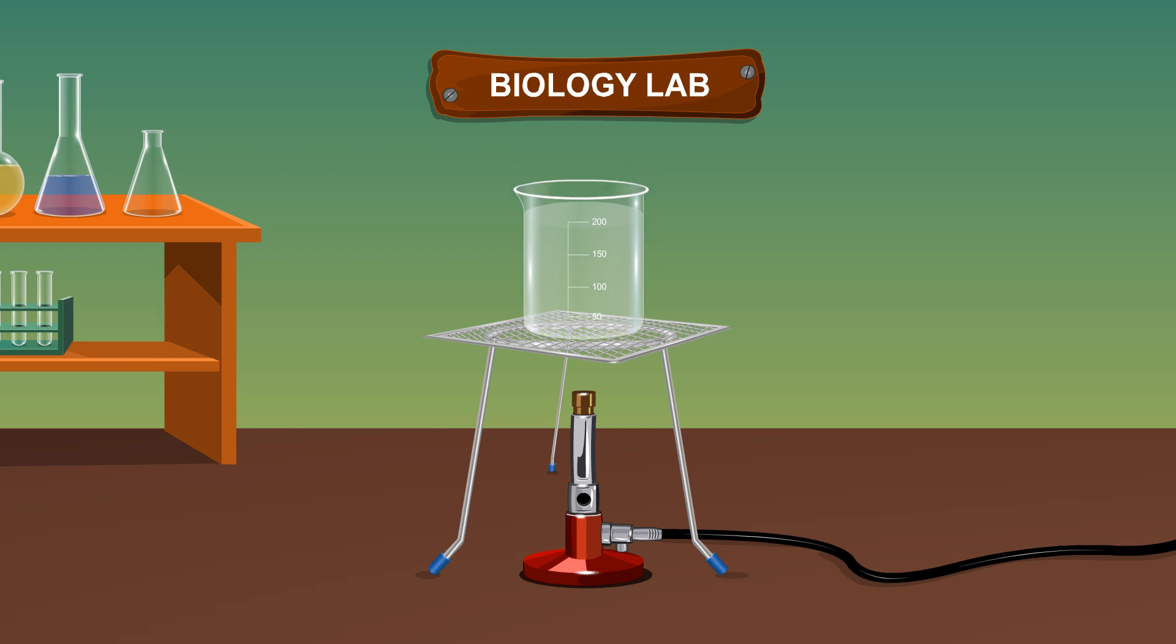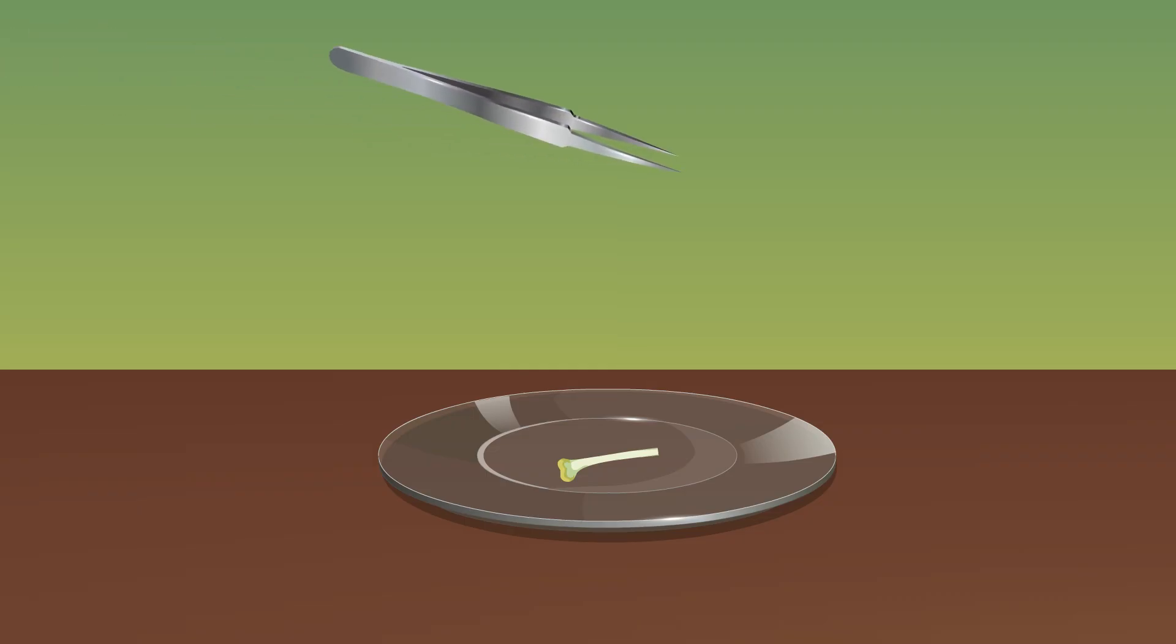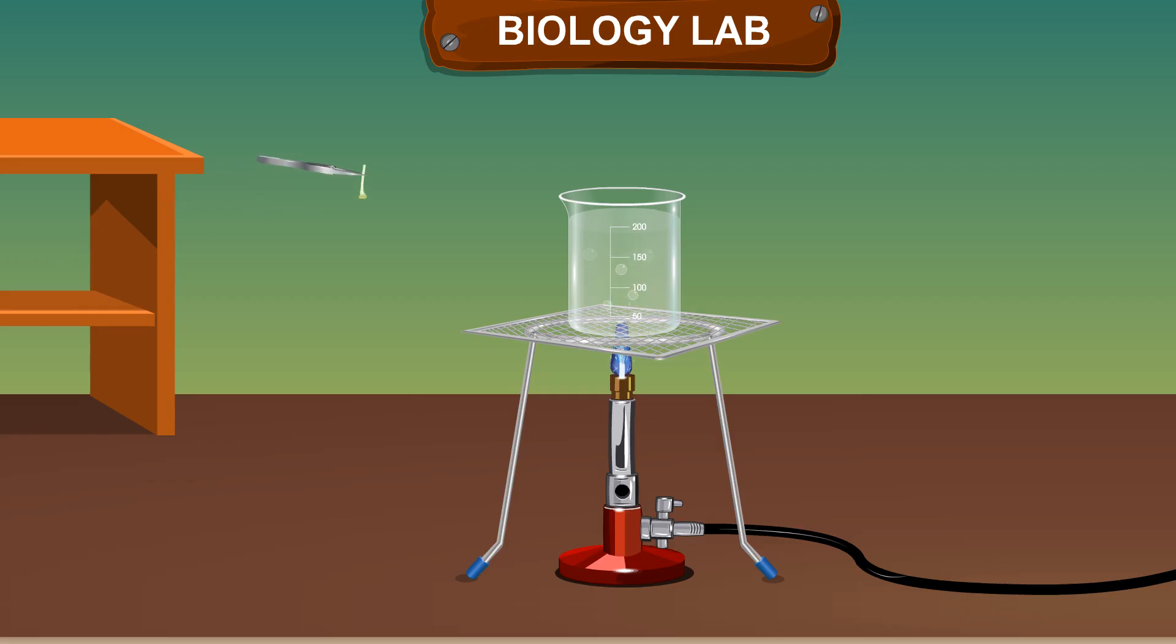Using forceps, transfer the stigma into the beaker containing boiling water. Boil it for 5 to 10 minutes to soften the tissues.